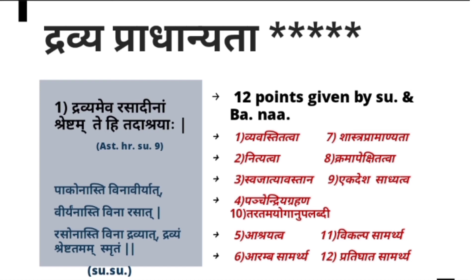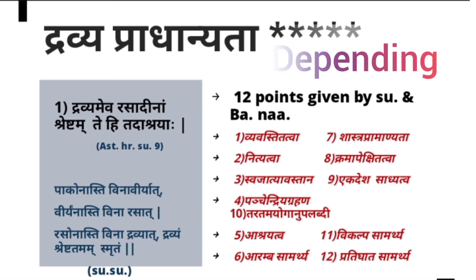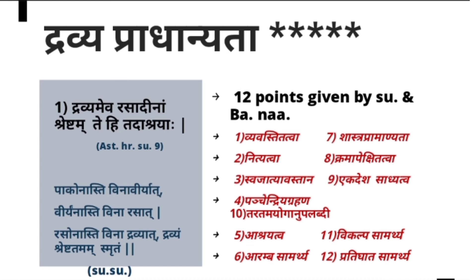We never say 'give Vamana with Madhura Rasa' — we always specifically name the Dravya. So Dravya is Pradhana. The seventh point is Shastra Pramanyat — in Shastras, Dravya is mentioned as indication for any disease. The eighth point is Krama Pekshita — Rasadi Gunas are dependent on Dravya. If a Dravya is Taruna, its Gunas are also Taruna — as in the mango example.